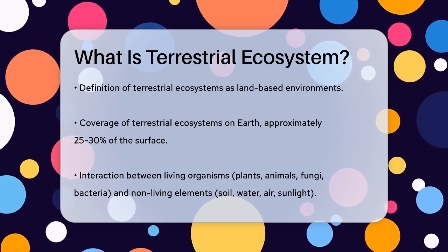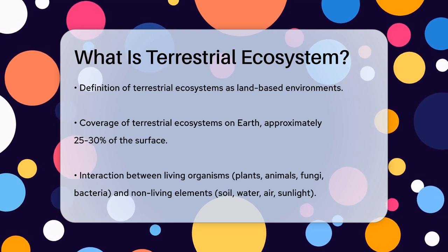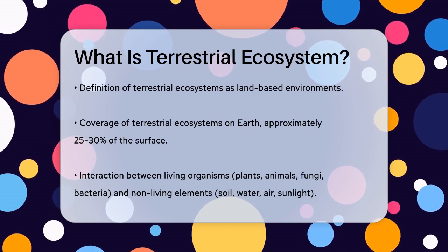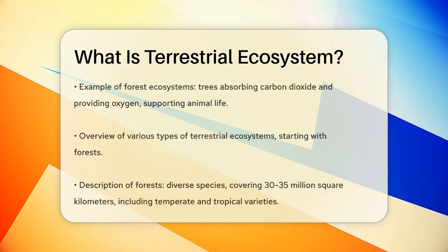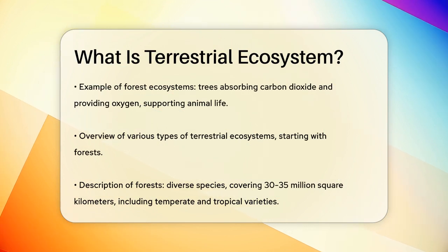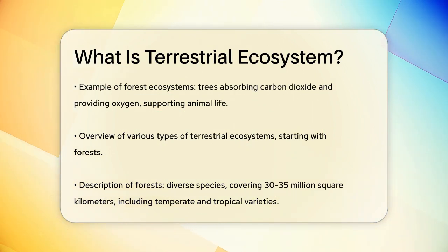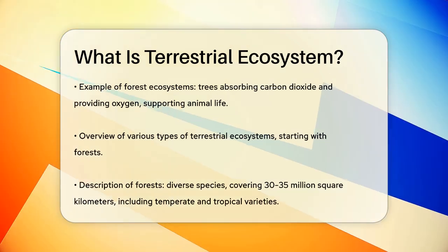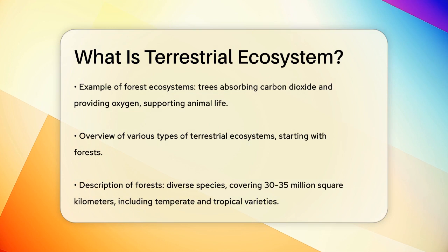One of the key characteristics of terrestrial ecosystems is the interaction between living and non-living components. This means plants, animals, fungi, and even bacteria all coexist with elements like soil, water, air, and sunlight. For example, in a forest ecosystem, trees absorb carbon dioxide and release oxygen, while animals like deer and birds rely on the trees for food and shelter.